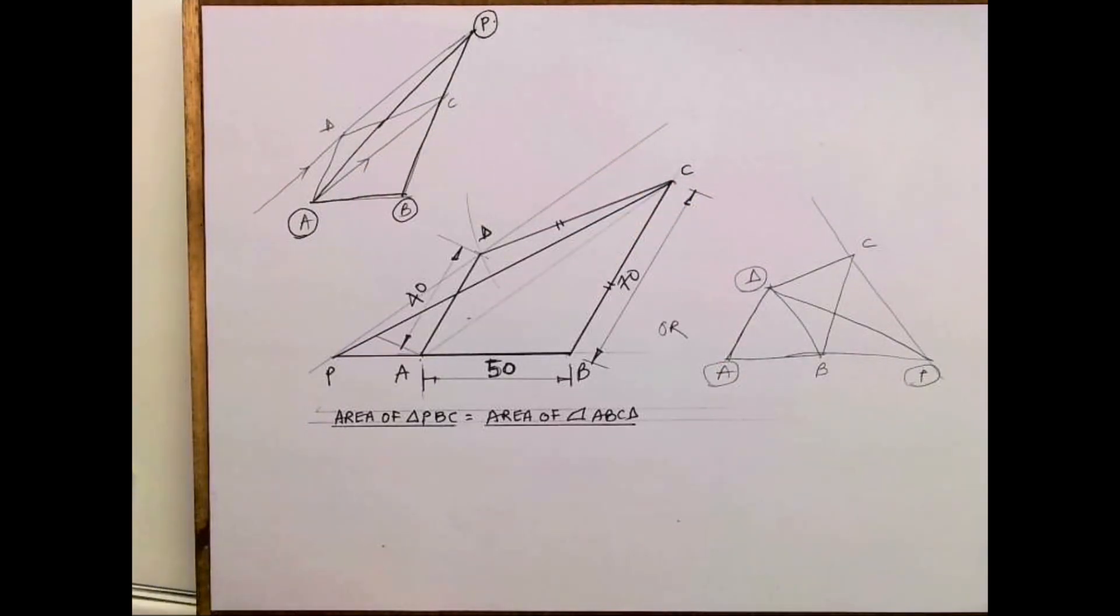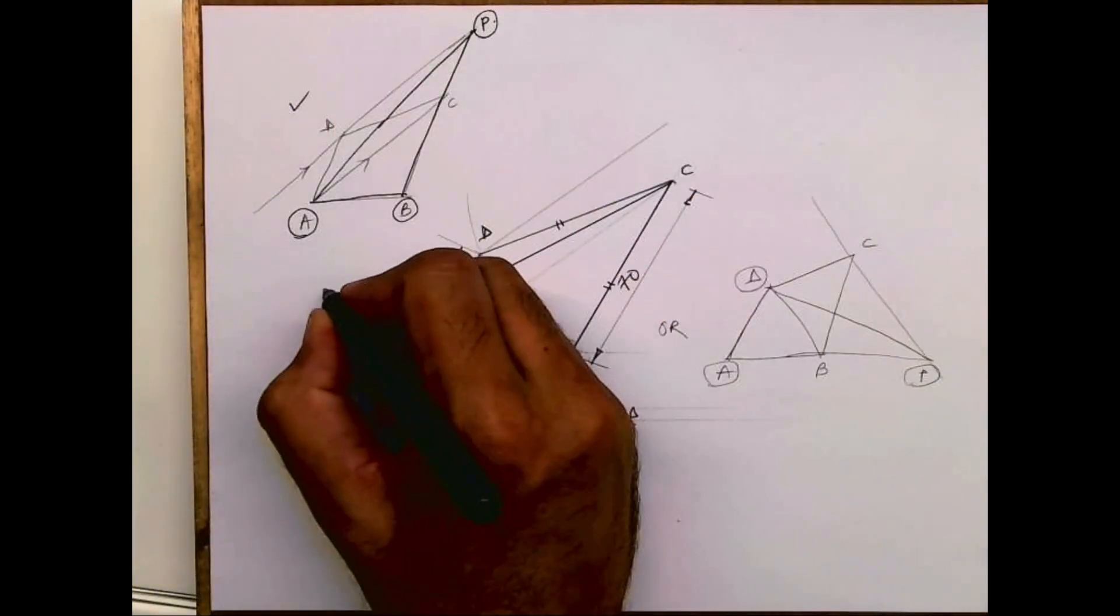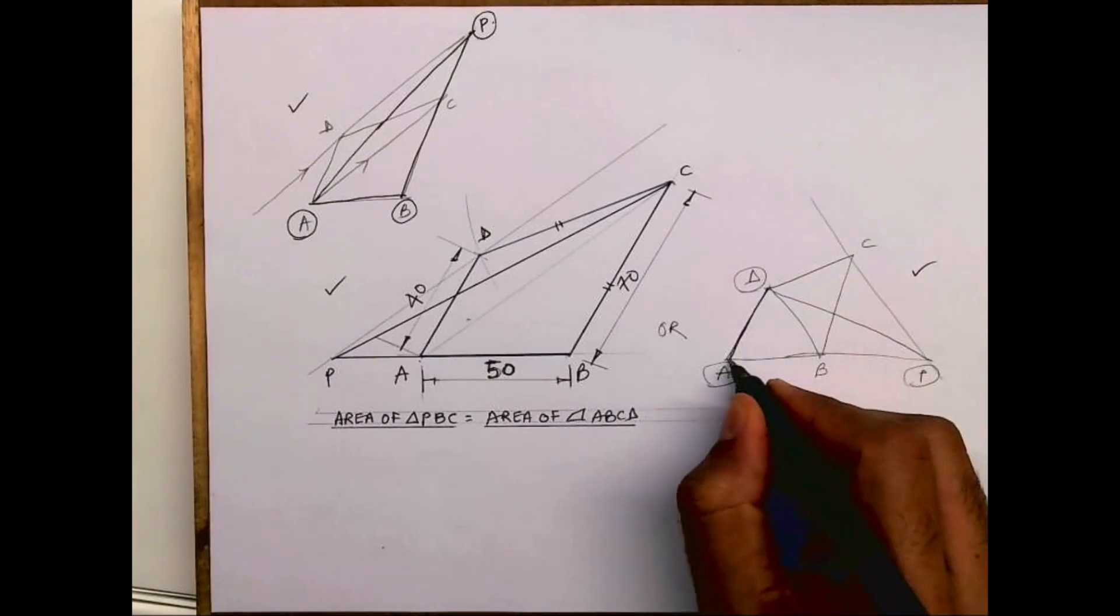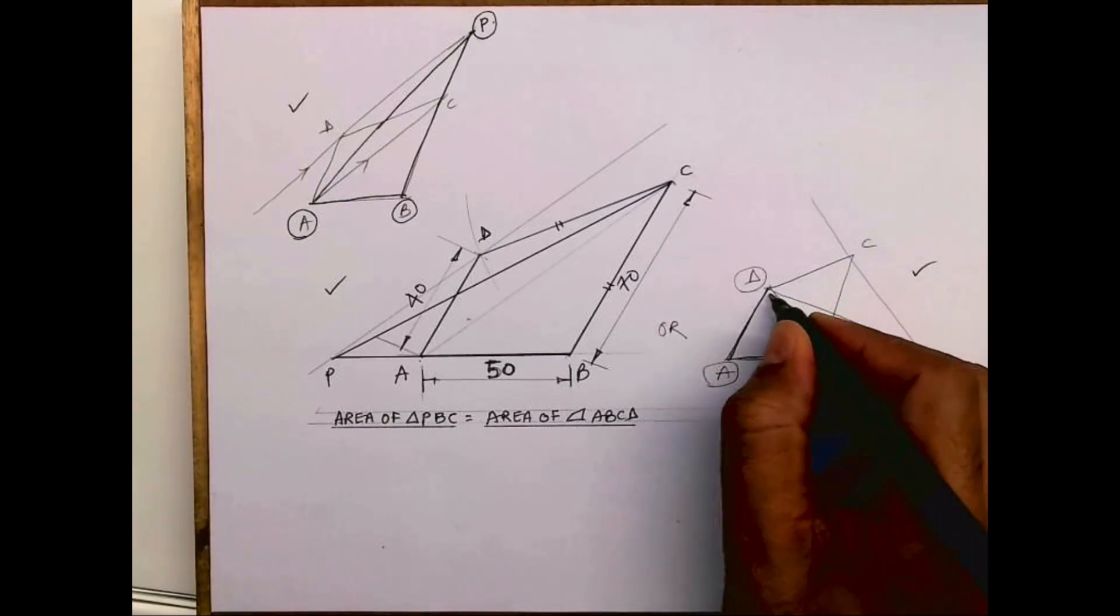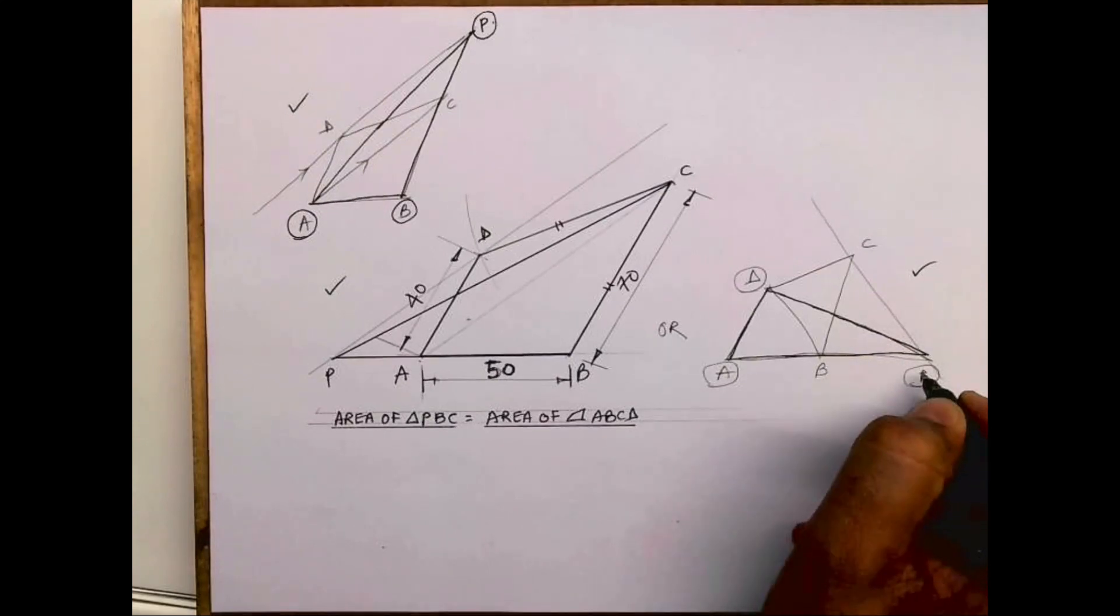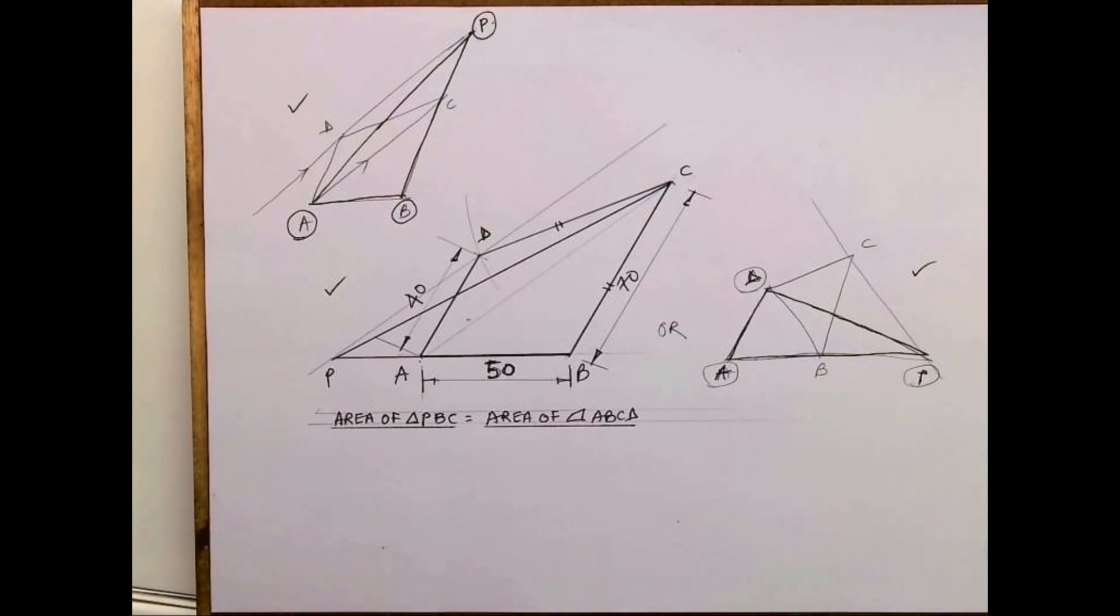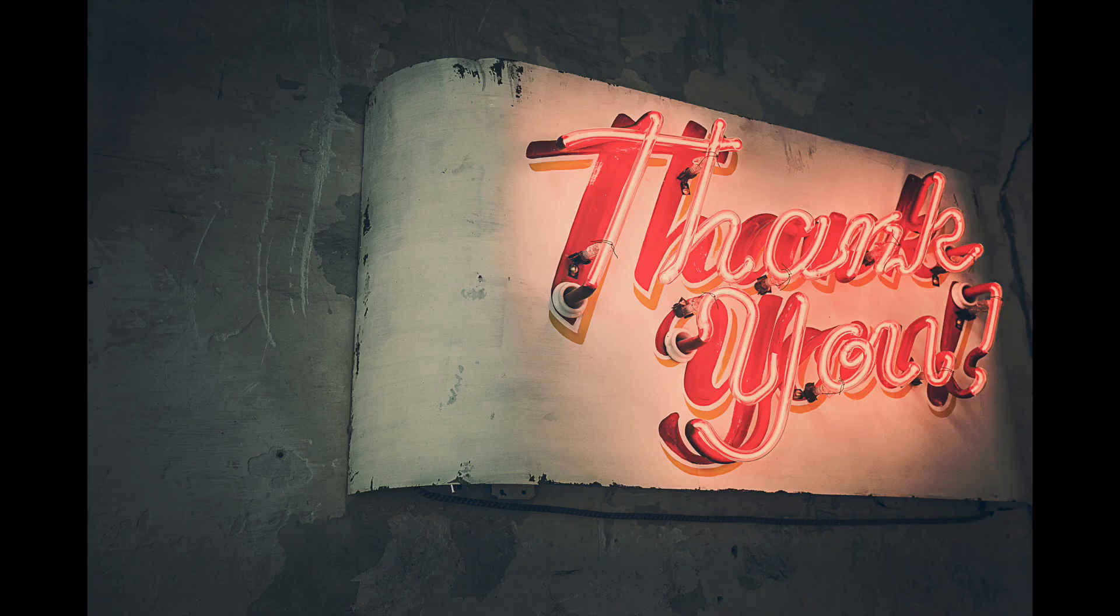There are multiple ways how we can do the same sum. All three are correct, so this is the final triangle. ADP, I can draw it like this, or the earlier one, or now APB. Thank you.